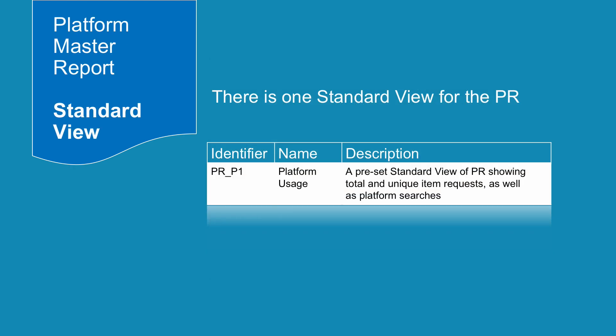There is one standard view for the PR. PR P1 is a preset view of PR that shows total and unique item requests, as well as platform searches.